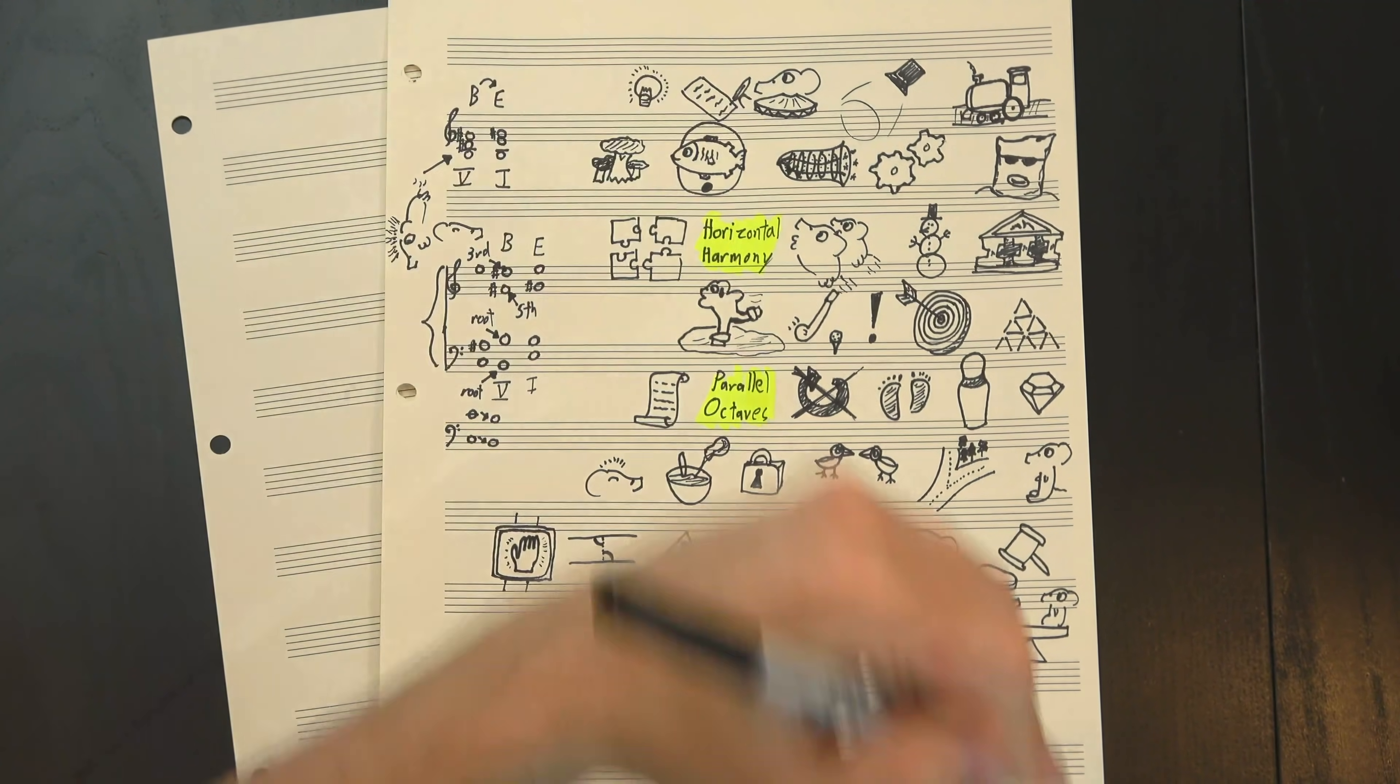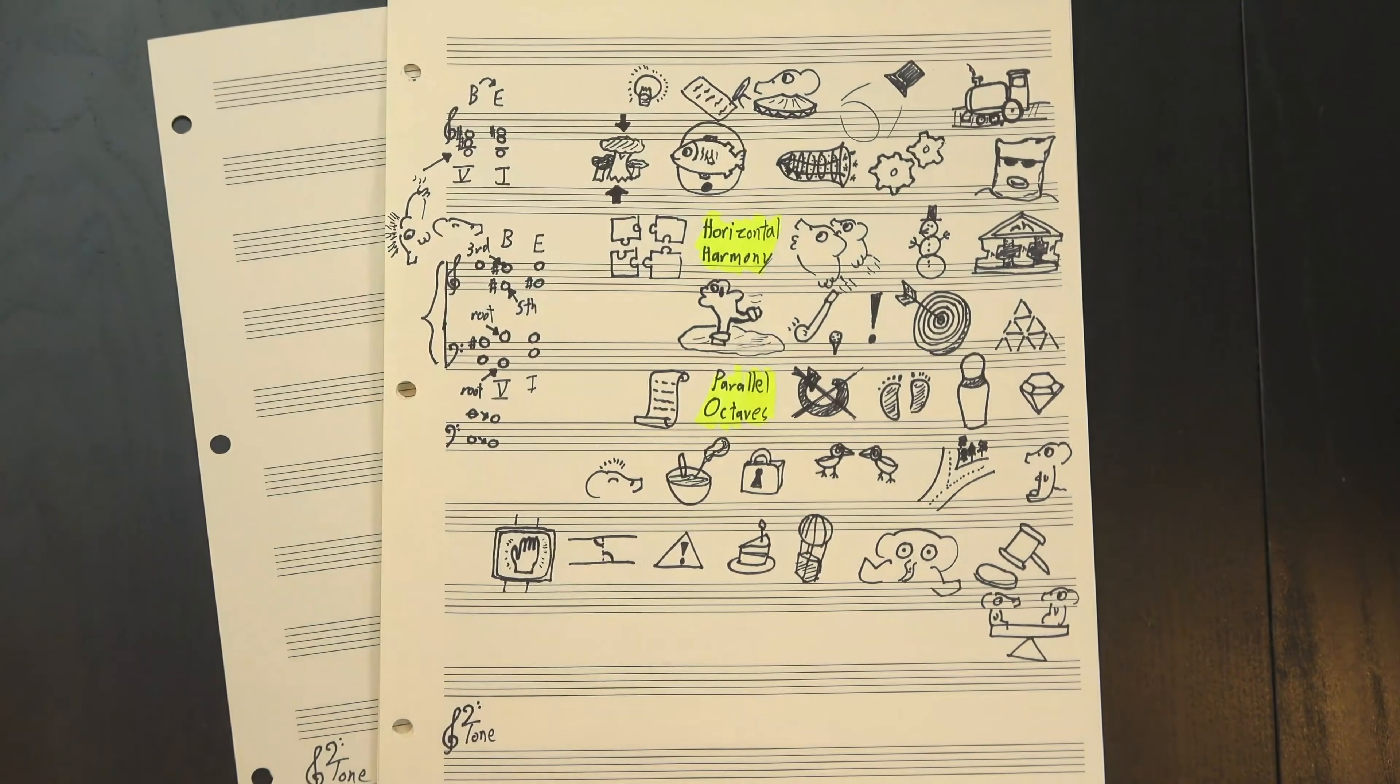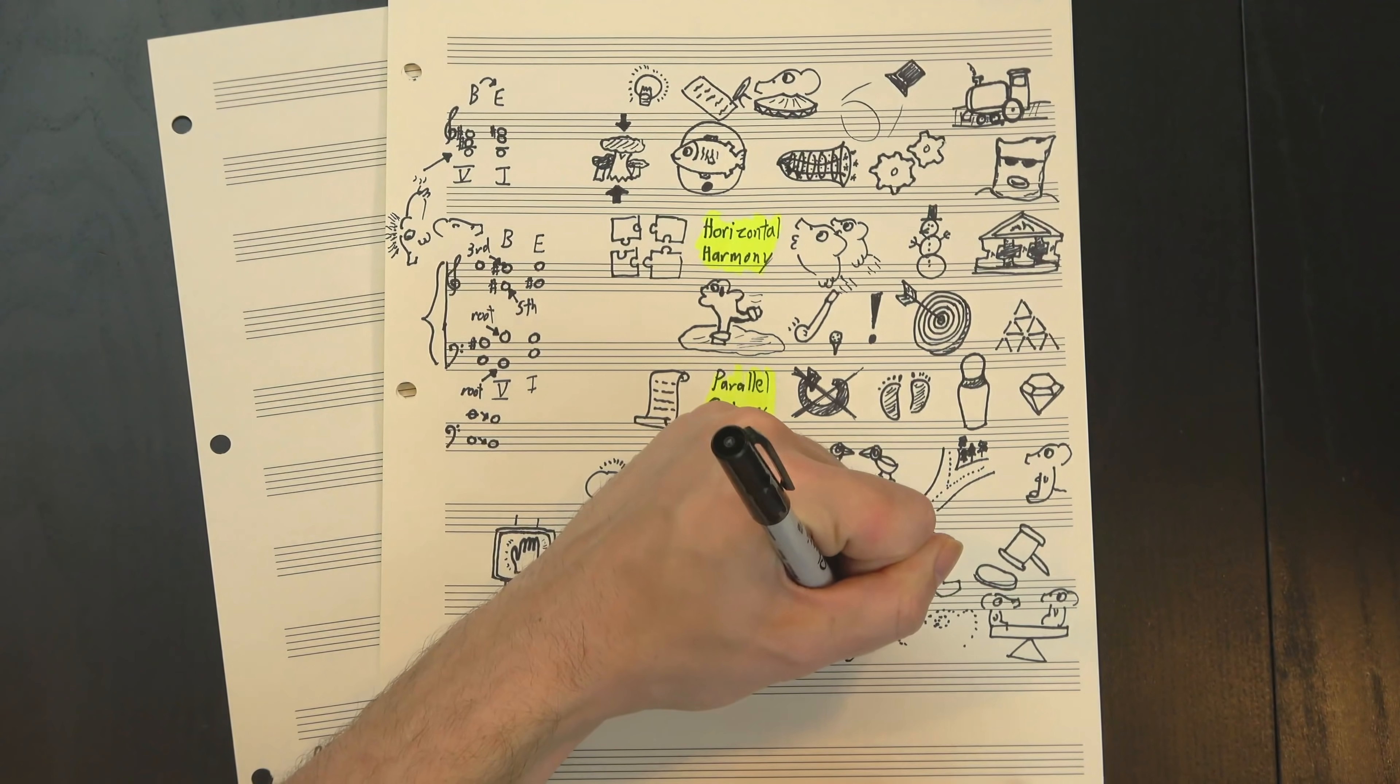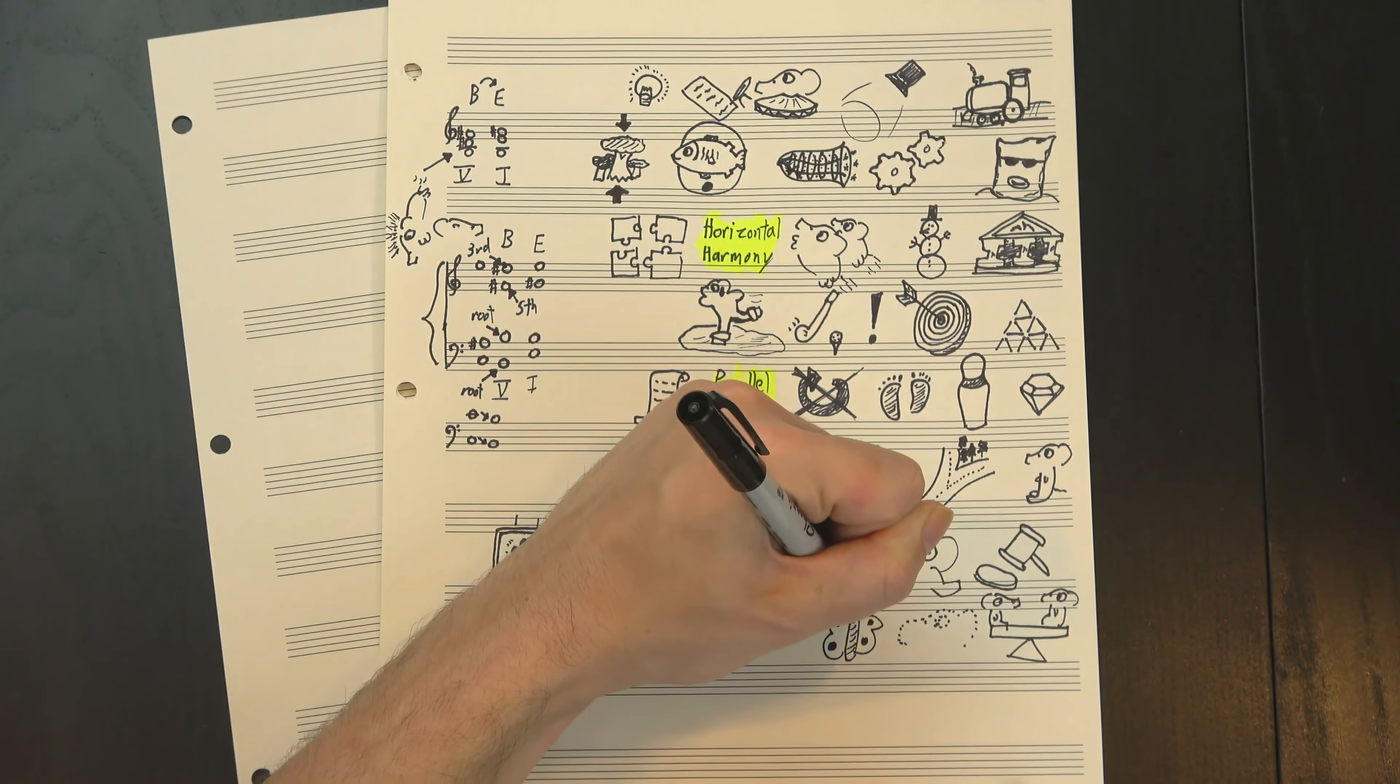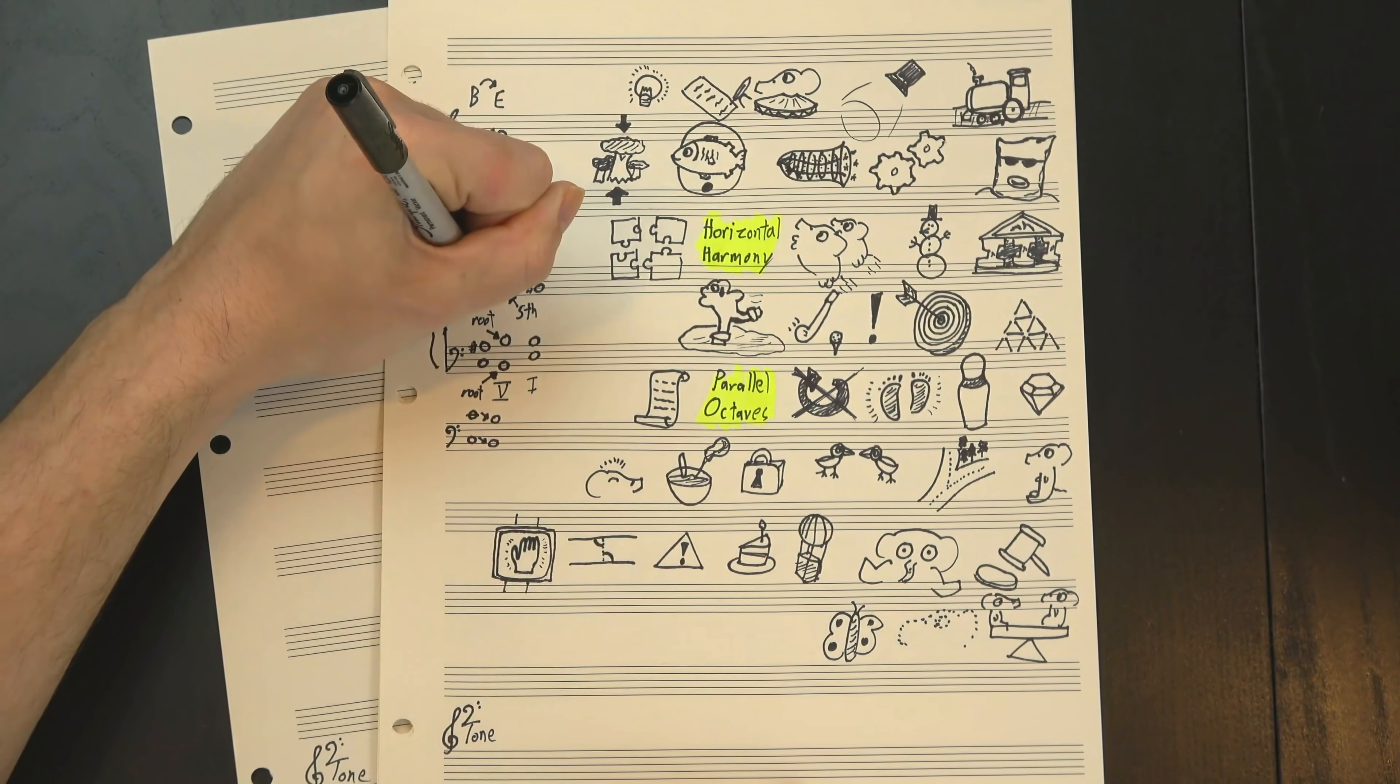But since we're already approaching the root of our target chord from above and below, that leaves our fifth with no good options. But honestly, that's okay. It's the least important note in the chord, so we'll just approach it from a whole step below instead, giving us this.